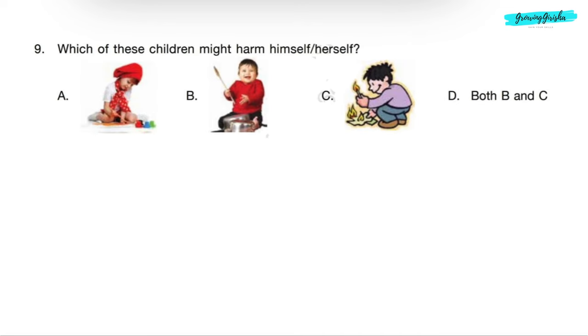Question 9: Which of these children might harm himself or herself? Option A shows a child coloring with brush. Option B shows a child playing with kitchen utensils. And option C shows a child playing with matchstick. Children playing with kitchen utensils and matchstick might harm themselves, as sharp-edged kitchen utensils and burning matchstick are dangerous and can cause severe injuries. So correct answer is option D, both B and C.